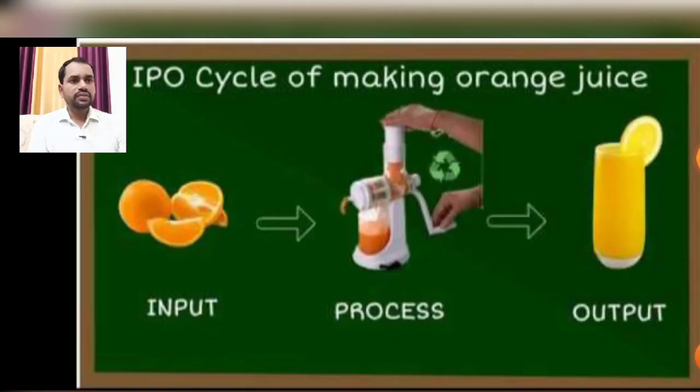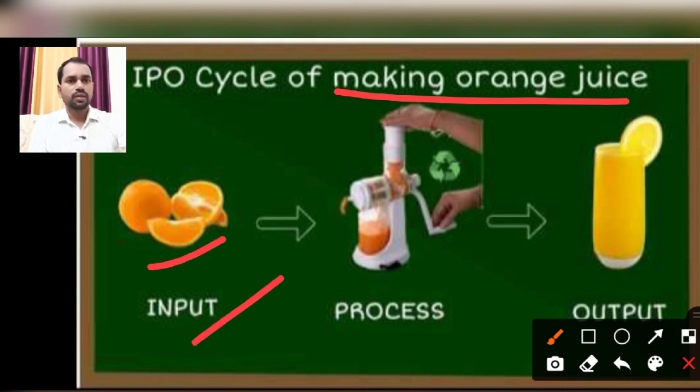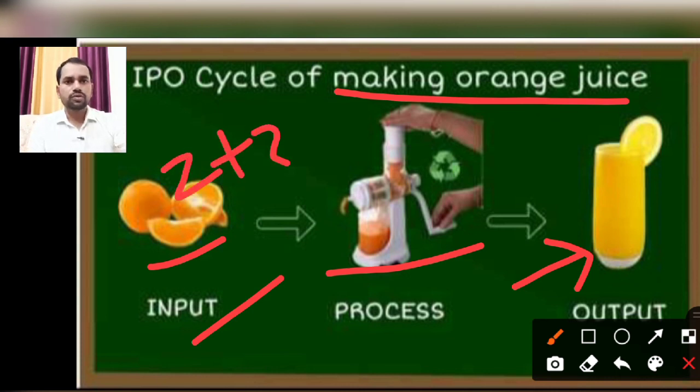Student, you can see IPO cycle through orange juice which I told you: orange peels are input, processing will be in juicer, and then juice will be ready. Simple process. Mathematics process is the same: 2 plus 3, processing after you, 5 will be output.